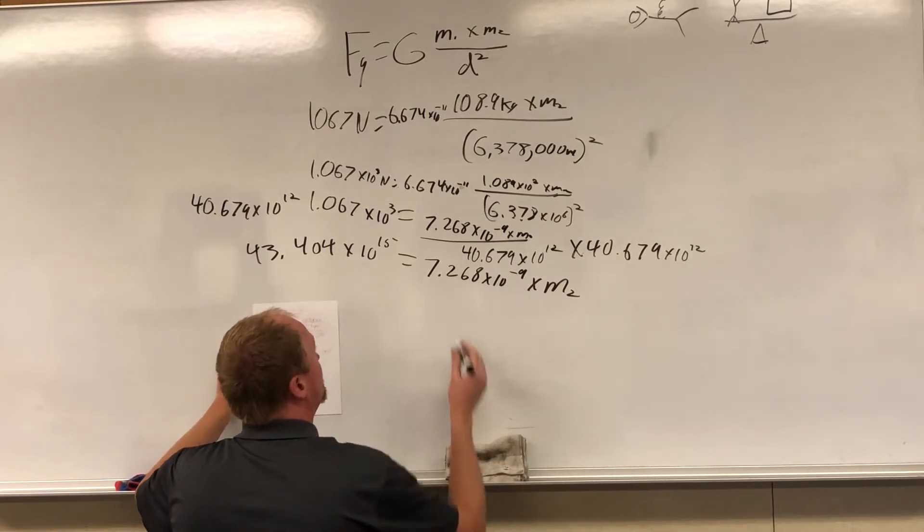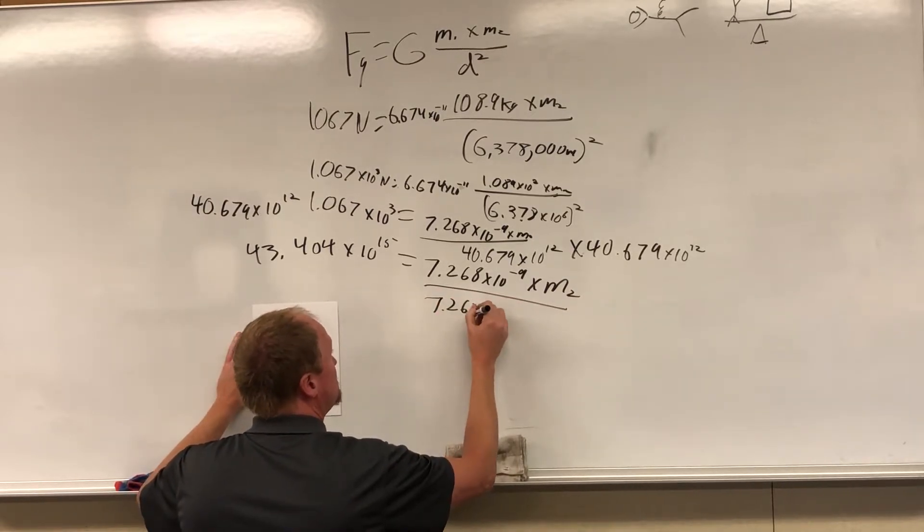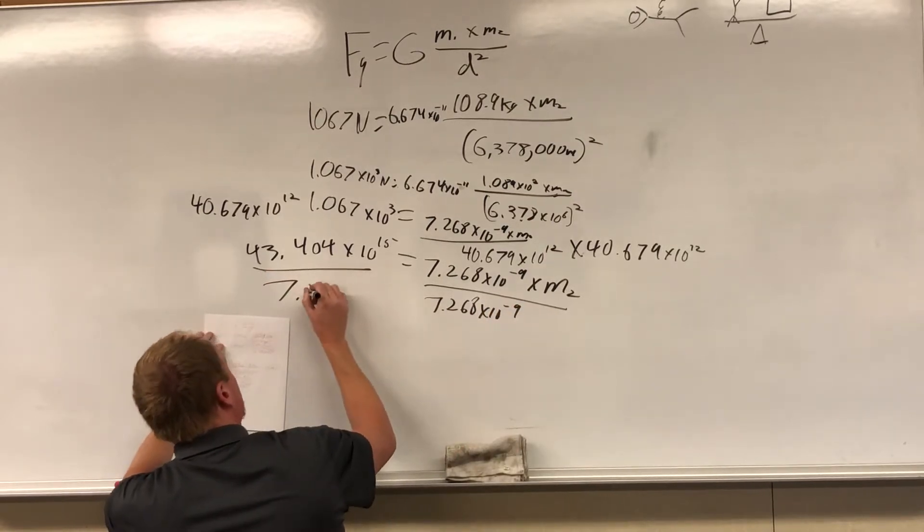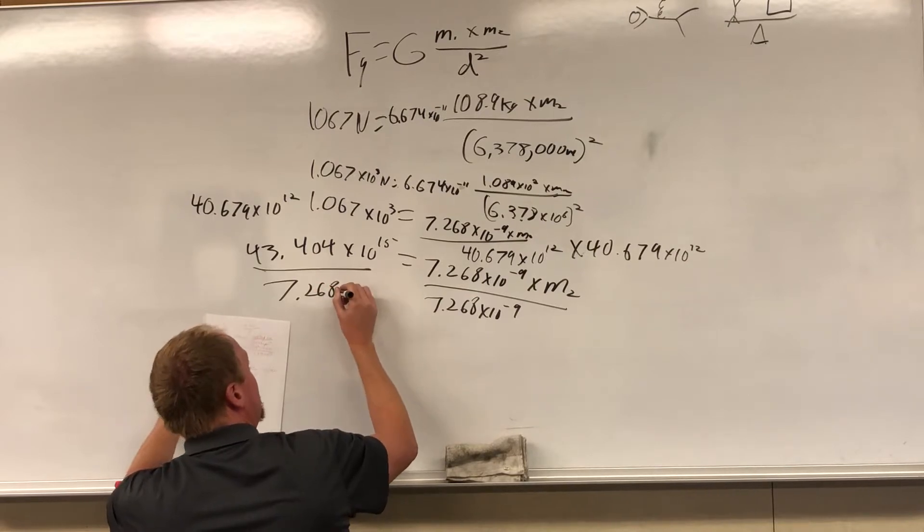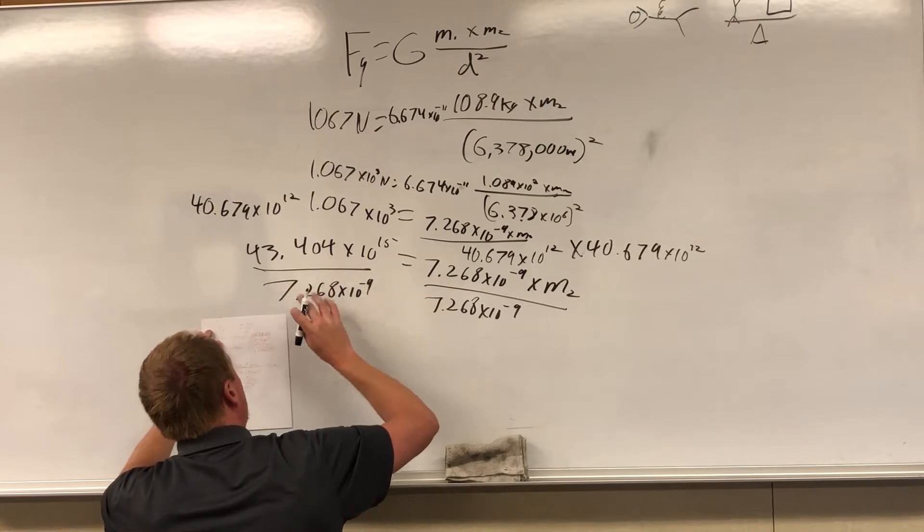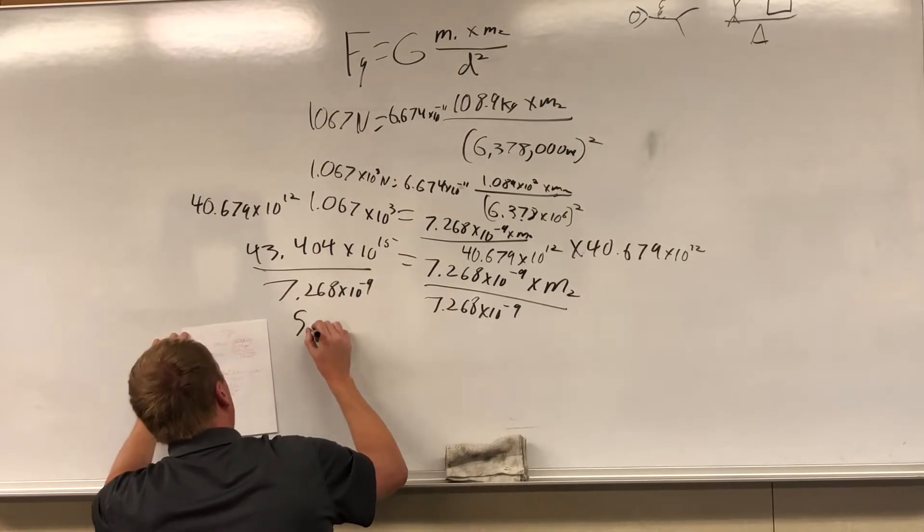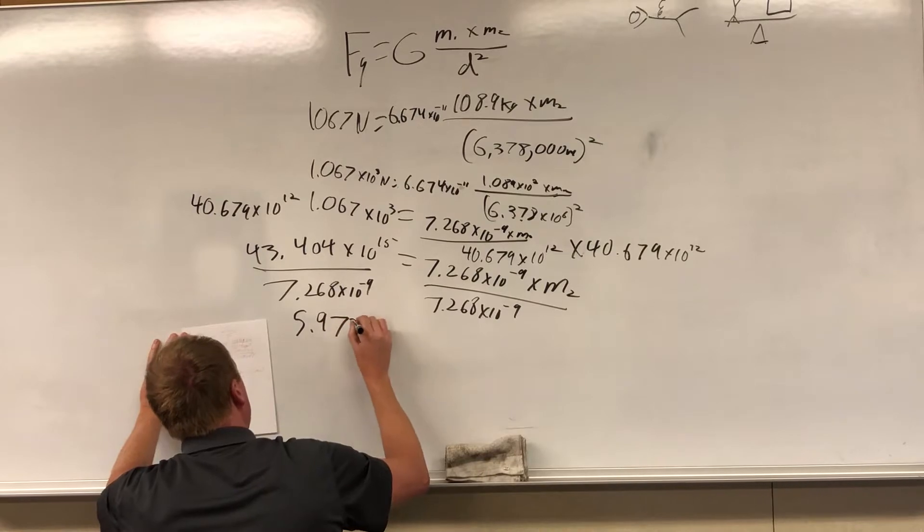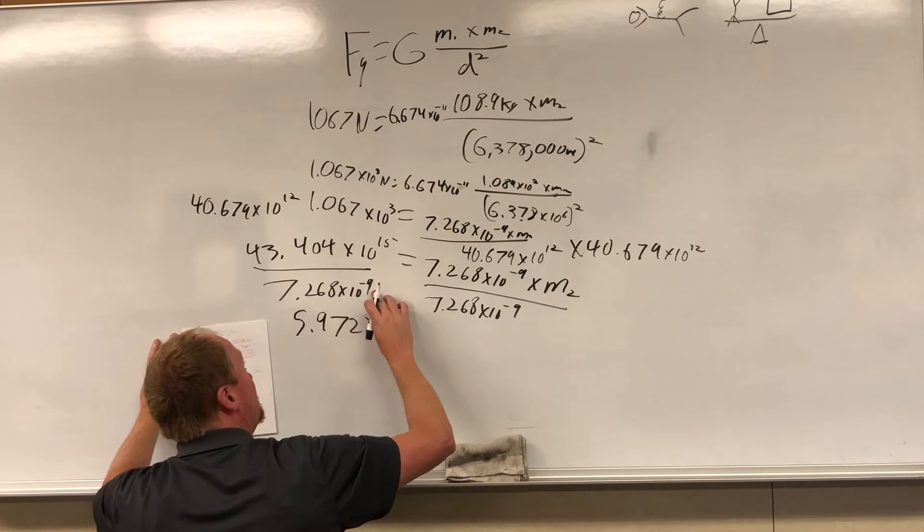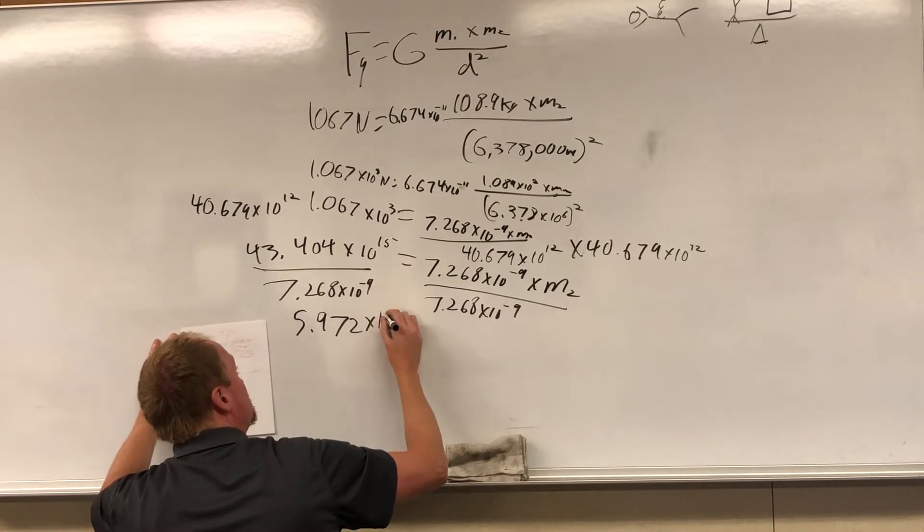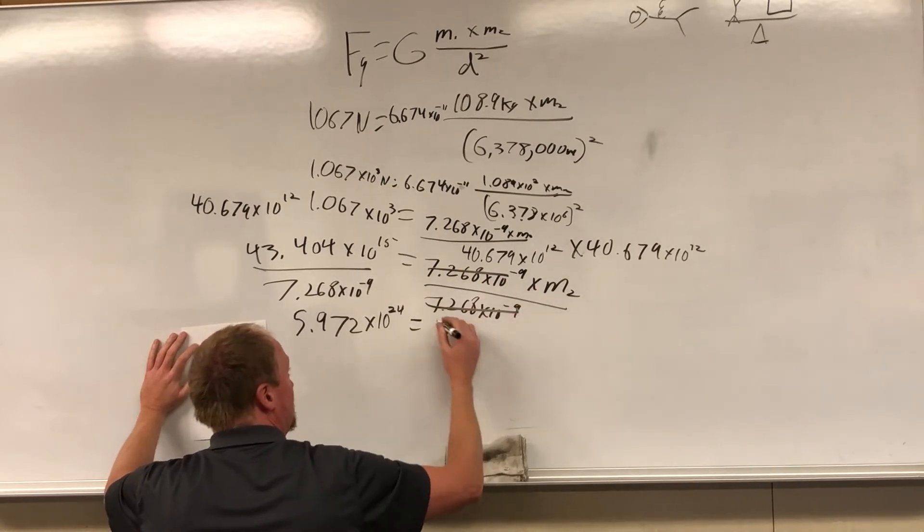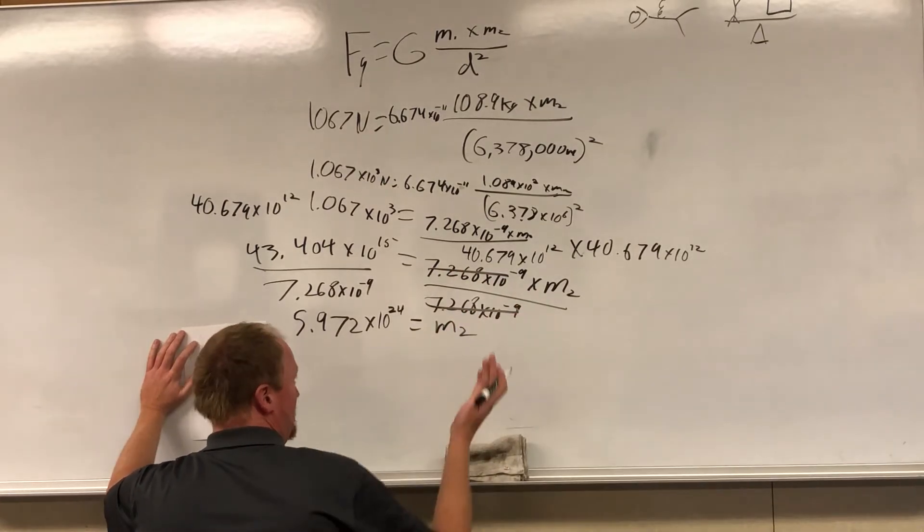And that equals 7.268 times 10 to the negative 9 times that mass we're still trying to find. Divide both sides by 7.268 times 10 to the negative 9. So 43 roughly divided by 7, and I got 5.972 times, 15 minus negative 9 is the same as plus 9, 10 to the 24. These are, by the way, canceling out, m2, the second mass.